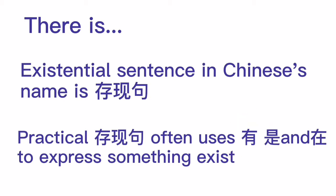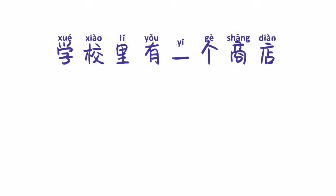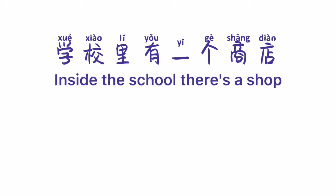We will start from one example: 学校里有一个商店 — 'There is a shop in the school.' The literal translation is: 学校里, inside the school; 有, there is or to have; 一个商店, one (with measure word) shop. Probably you noticed the order is very different from English, but if we follow the structure, it is going to be fine.